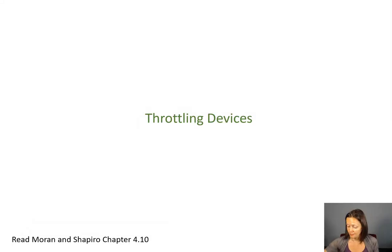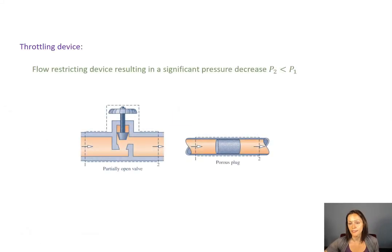In this segment, we're going to talk about throttling devices, and a throttling device is a flow restricting device that causes a significant decrease in the pressure.